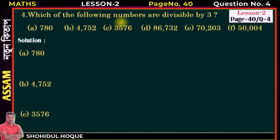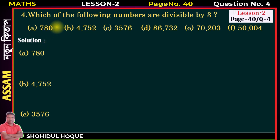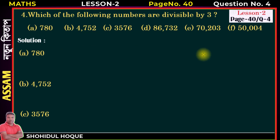To apply the divisibility test, we look at the digits of the number. The digits of 780 are 7, 8, and 0. We will add these three digits together to find their sum.